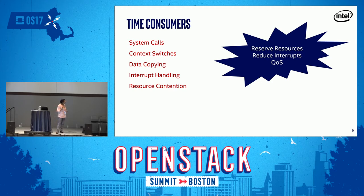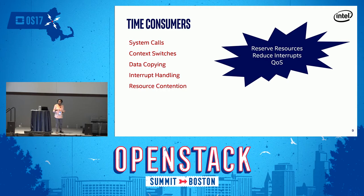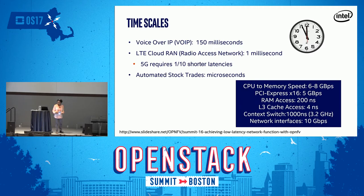What consumes time? System calls, context switches, data copying - can I avoid any of these? Interrupt handling and resource contention: if we keep bouncing each other out, there are going to be cache misses that cost us. A context switch is 1,000 nanoseconds. A line miss in your core means going all the way to RAM - that's about two orders of magnitude right there.